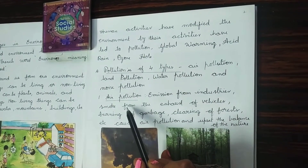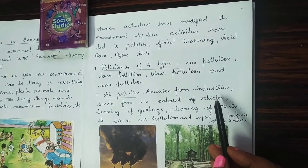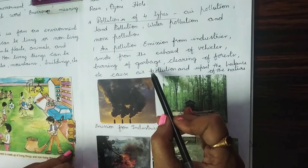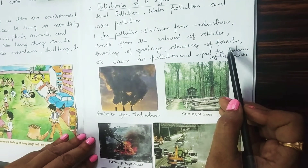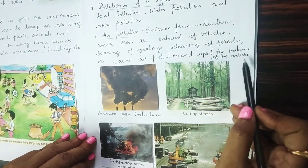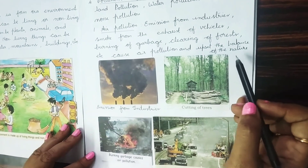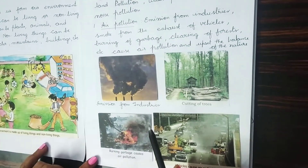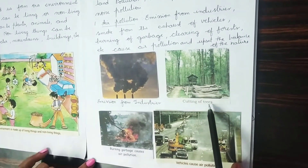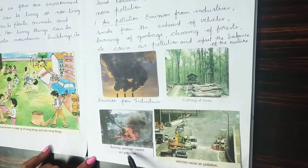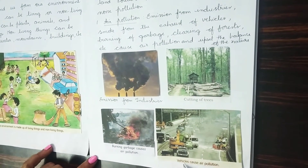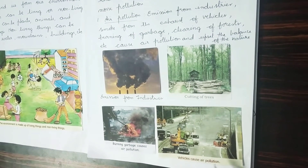Coming to air pollution — emission from industries, smoke from the exhaust of vehicles, burning of garbage, and clearing of forest cause air pollution and have upset the balance of nature. This picture shows emission from industries, cutting of trees, burning of garbage, and vehicles, all causing air pollution.